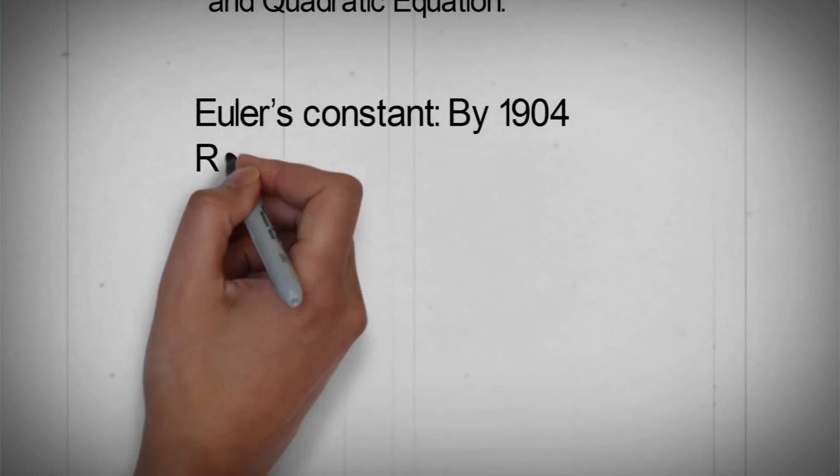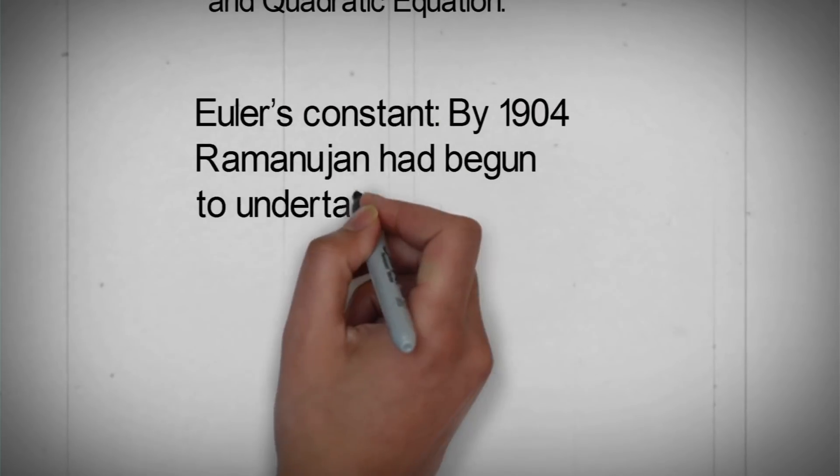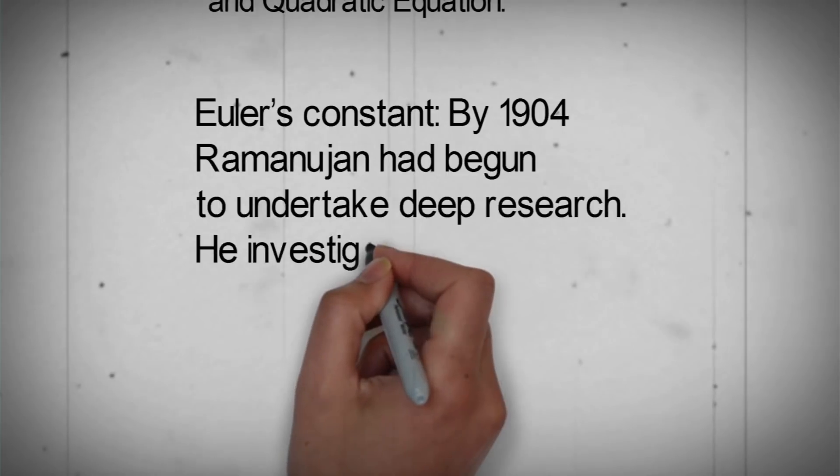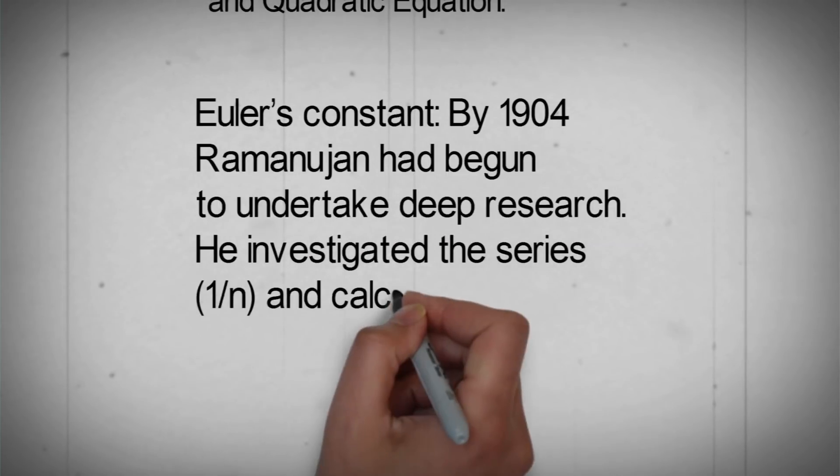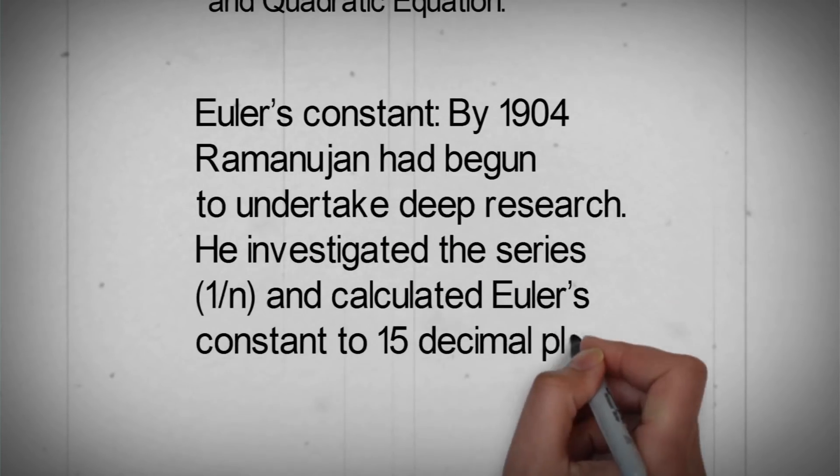Euler's constant. By 1904, Ramanujan had begun to undertake deep research. He investigated the series of 1 by n and calculated Euler's constant to 15 decimal places.